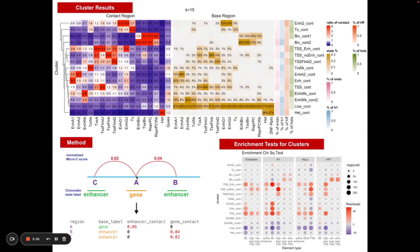So what we do is we take those regions and we're able to put them into a matrix that can be clustered in this way. We take the base label for each region, so region A has a base label of gene, and then we look at what kind of contact it has with other regions. In this case, region A has a contact score of 0.04 with enhancer B and 0.02 with enhancer C.